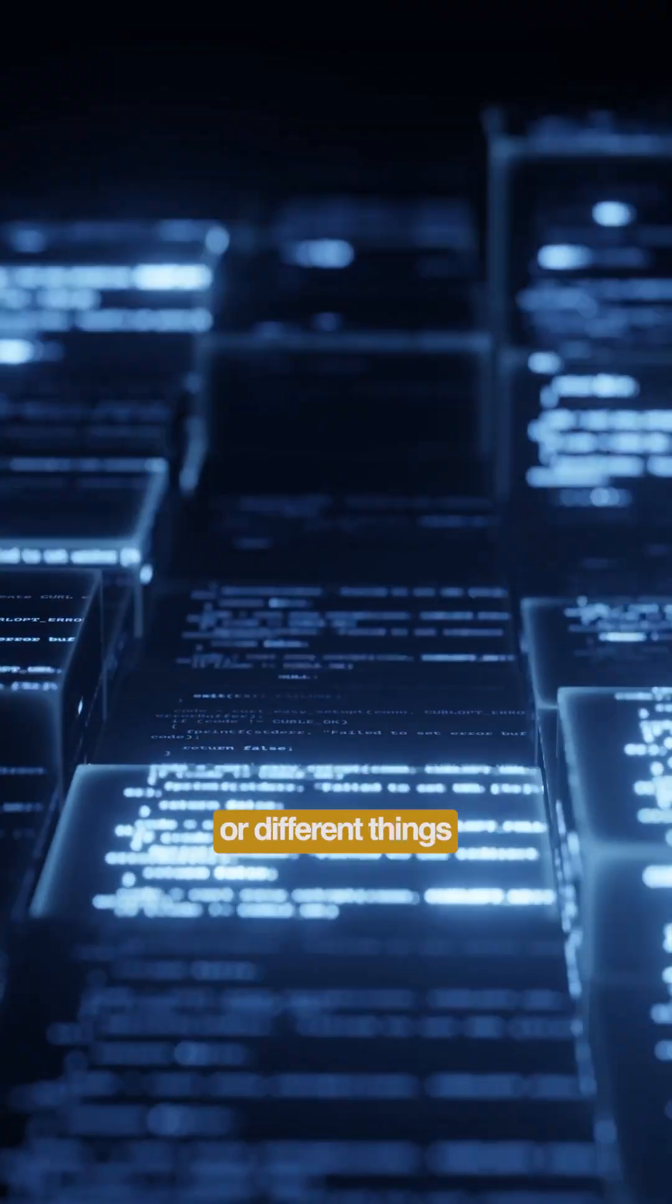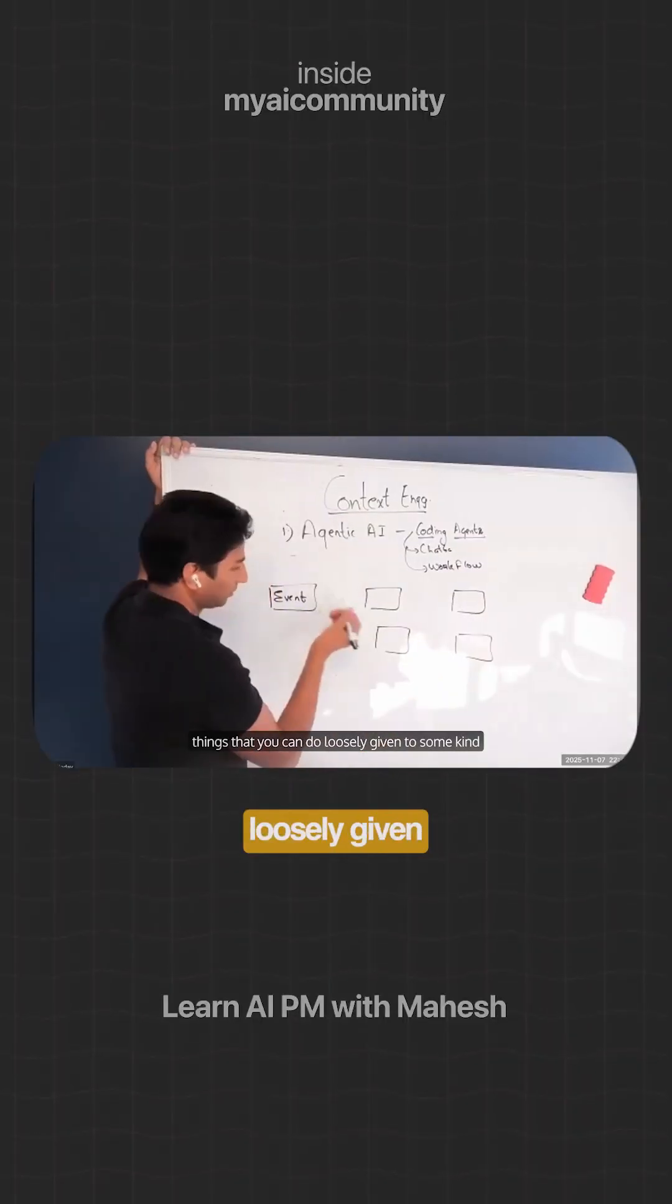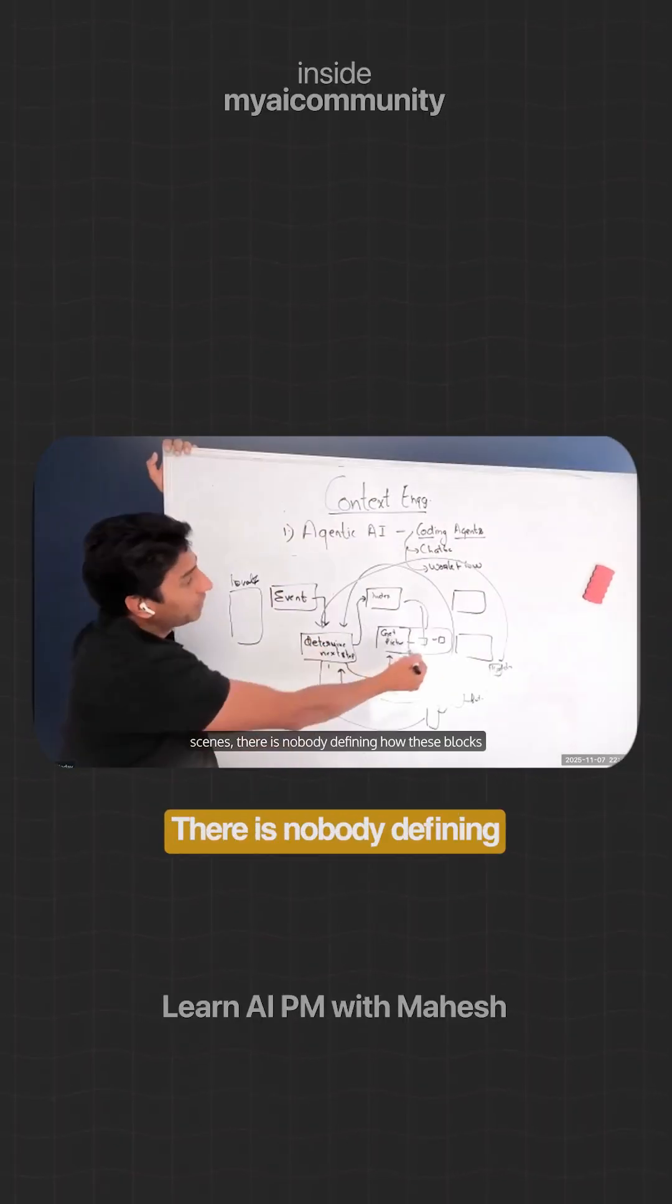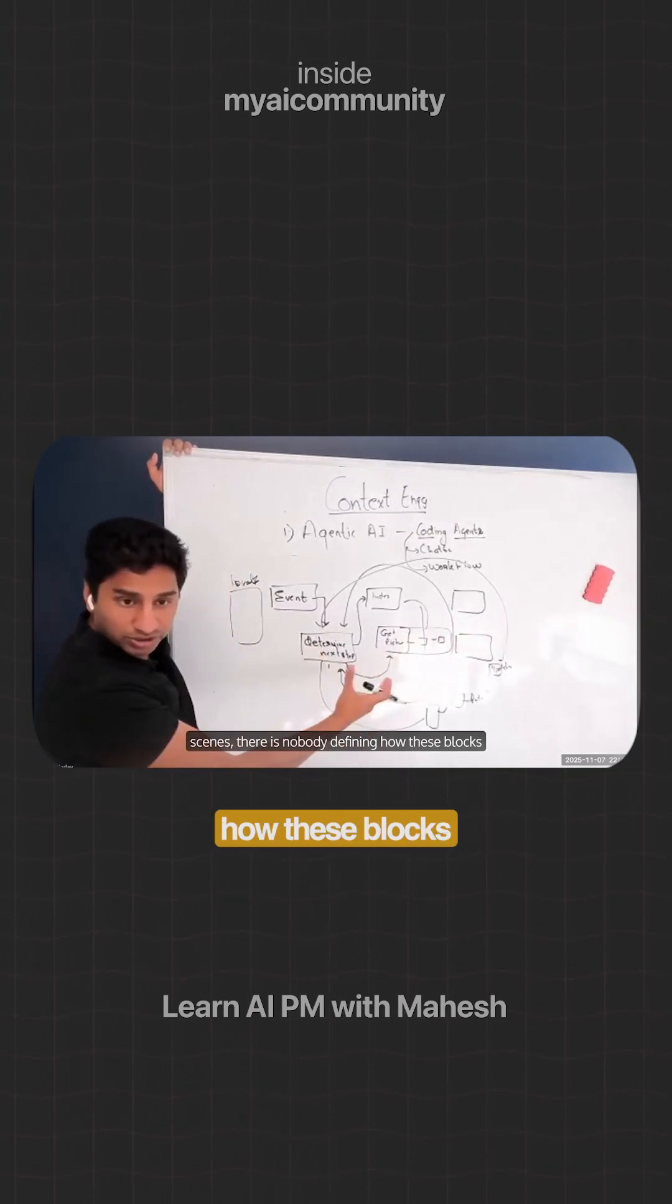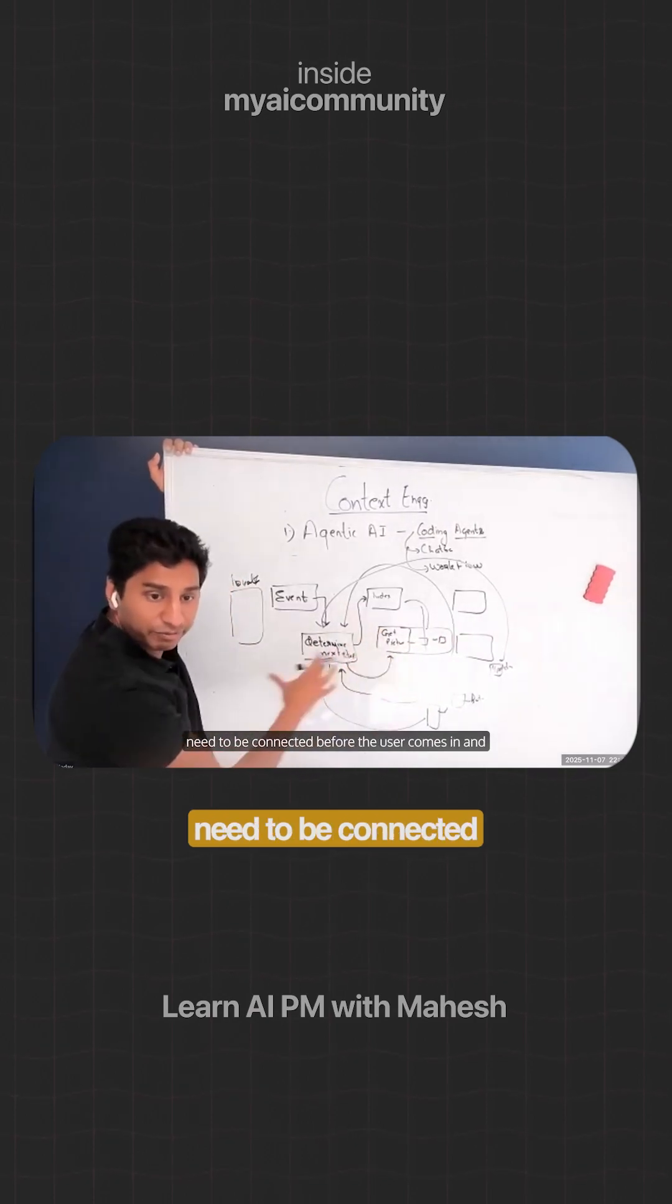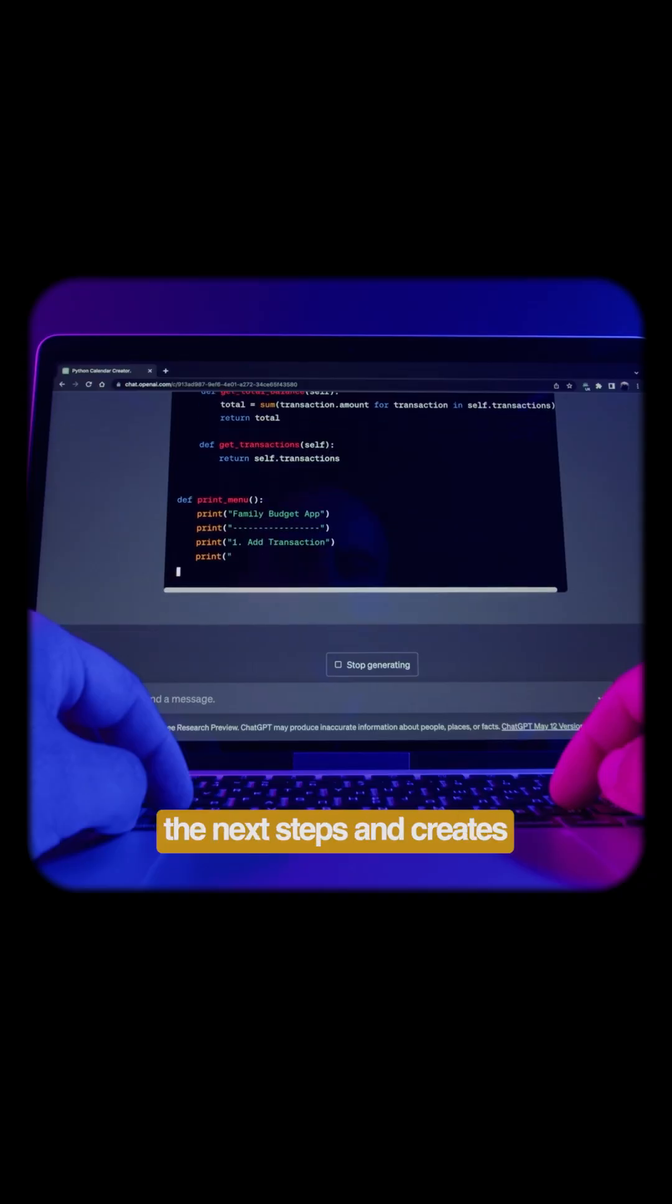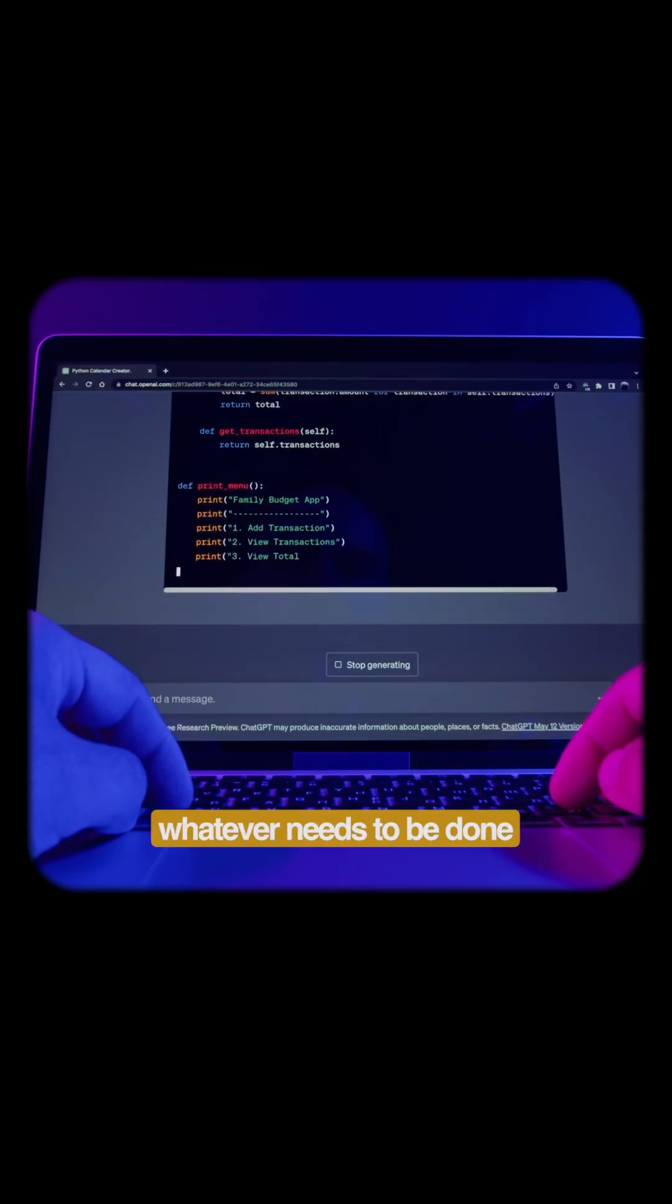These are loosely given to some kind of thing which just determines the next step. There is nobody defining how these blocks need to be connected before the user comes in and asks. Based on the user event, it determines the next steps and creates whatever needs to be done at runtime.